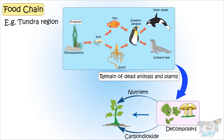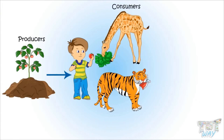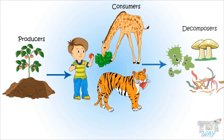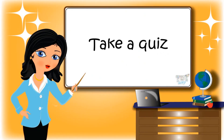So we learned so many examples of food chains and some terms like producers, consumers, and decomposers. Now you may go ahead and take a quiz to learn more. Bye-bye.